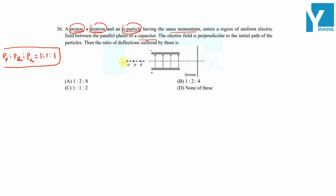All the particles are moving along this path and face a perpendicular electric field between the plates of the capacitor. This is the positive plate and this is the negative plate. The electric field in between is perpendicular to the motion of the particles. We need to find the ratio of deflection suffered by them.